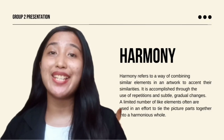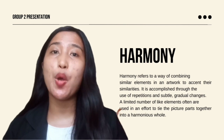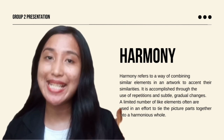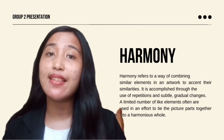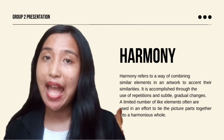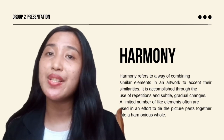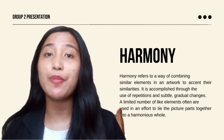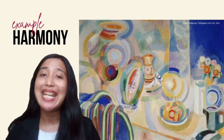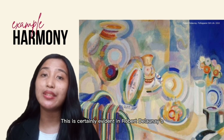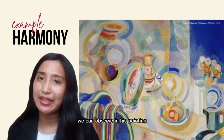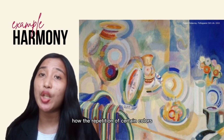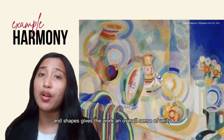The third principle of art is harmony. Harmony refers to a way of combining similar elements in an artwork to accent their similarities. It is accomplished through the use of repetition and subtle gradual changes. A limited number of like elements are often used to tie the picture parts together into a harmonious whole. This is evident in Robert Delaunay's colorful Portuguese still-life painting, where the repetition of certain colors, values, lines, and shapes gives the work an overall sense of unity.